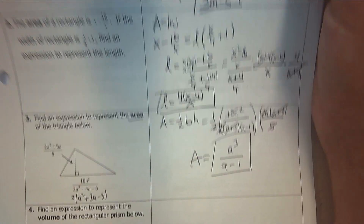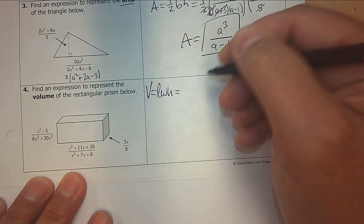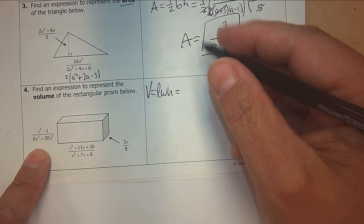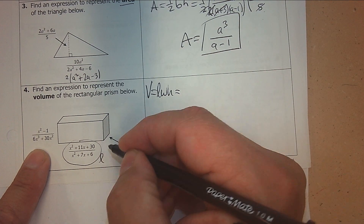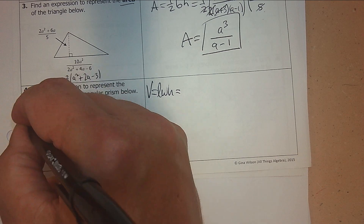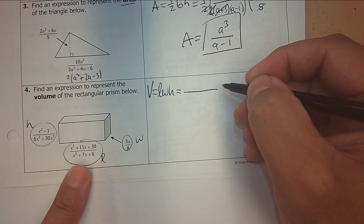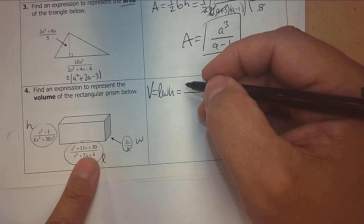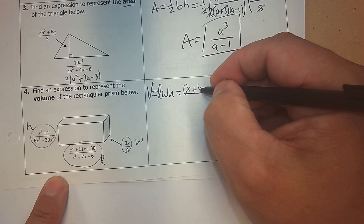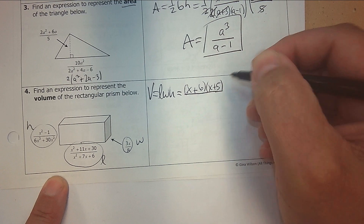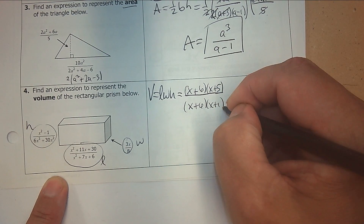Number 4: find the volume of the prism. The formula is length times width times height. As I substitute in, I'm going to factor. Two numbers that multiply to 30 and add to 11 are 6 and 5. Two numbers that multiply to 6 and add to 7 are 6 and 1.